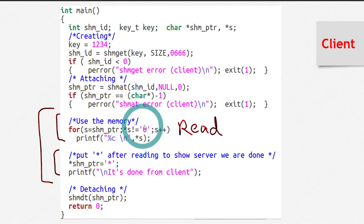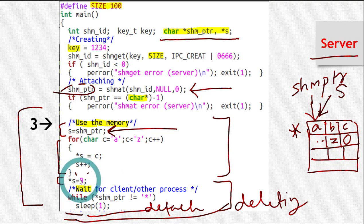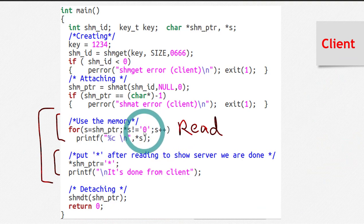So remember, we put this character there in the shared memory in the last, in the last slide in the server side program. So you can see here, this was the step that we were putting a terminating character here. So we will read up till that terminating character in the client side, right? And we will just print whatever there is on the screen. So this is the reading part.